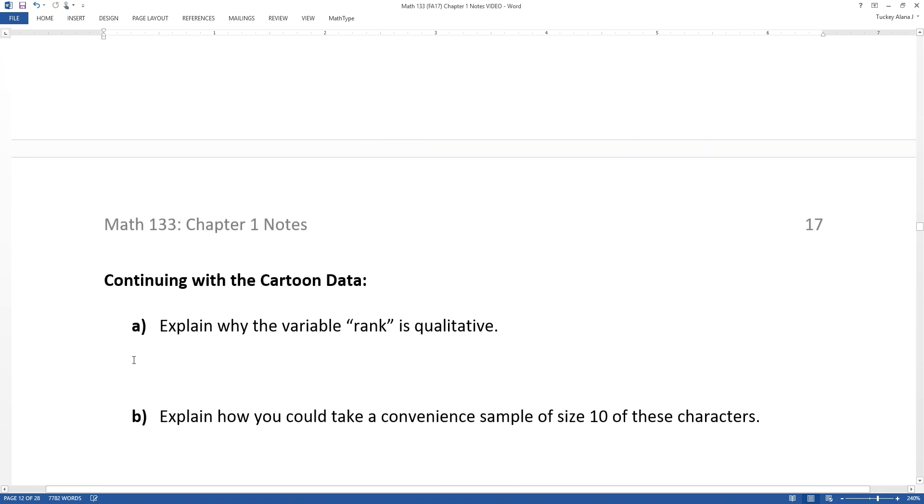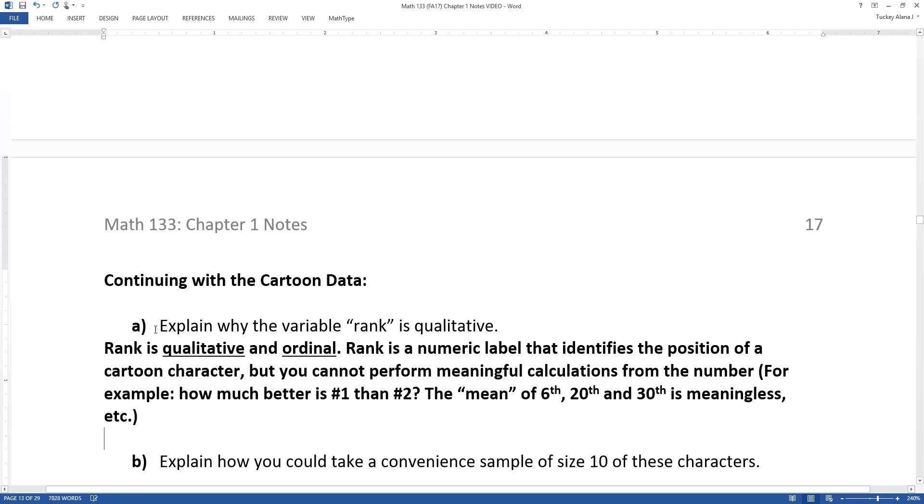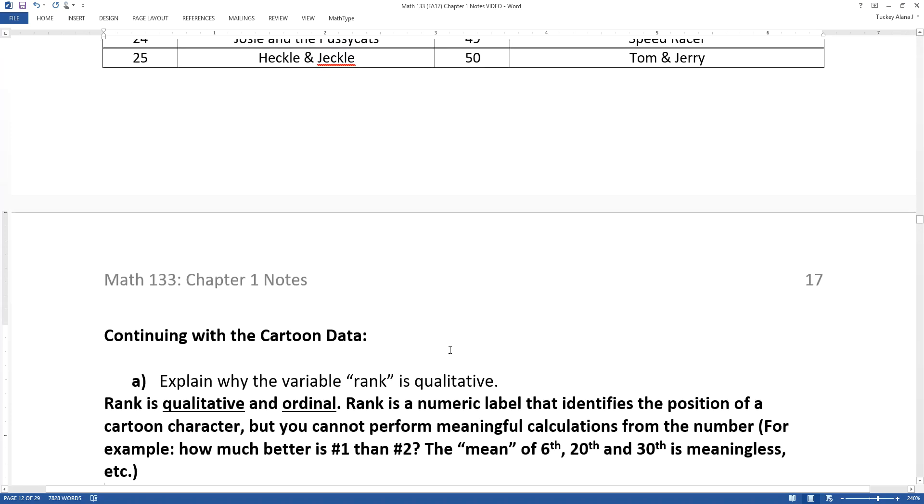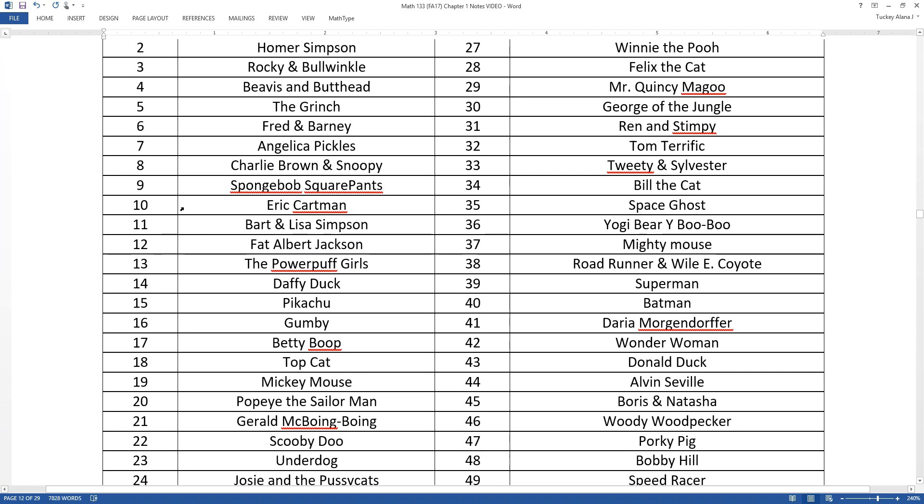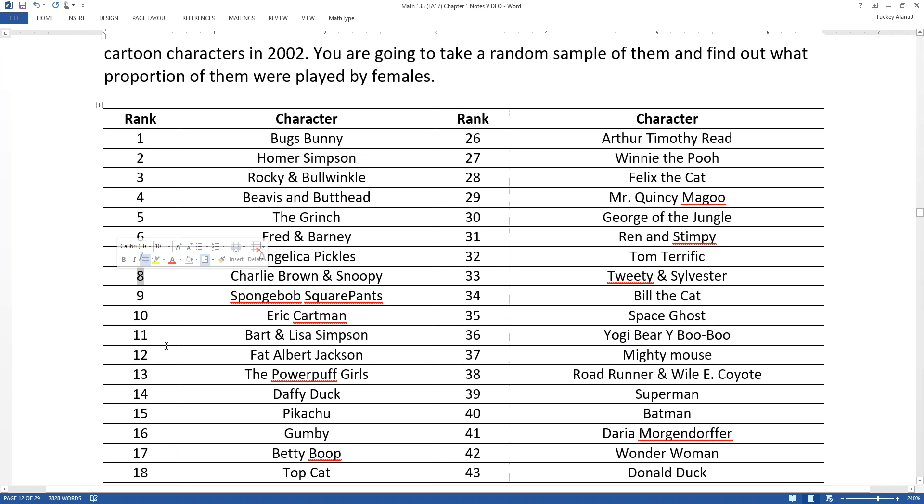Let's start with the beginning. Explain why the variable rank is qualitative. Rank is actually both a qualitative and an ordinal variable. It's a numeric label that identifies the position of the cartoon character, but you cannot perform meaningful calculations on this. For example, how much better is number one than number two? How much better is number eight than number 14? You have no idea.